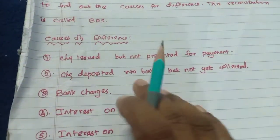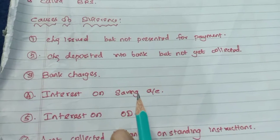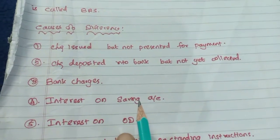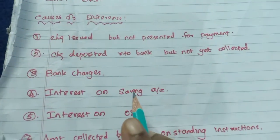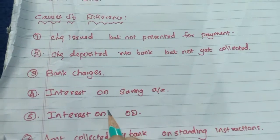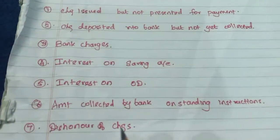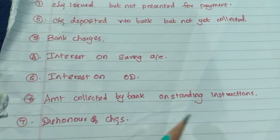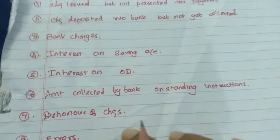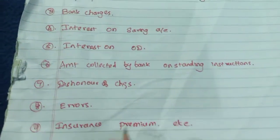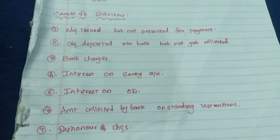The causes of difference between cashbook and passbook include: check issued but not presented for payment, check deposited into bank but not yet collected, bank charges, interest on savings account, interest on OD, amount collected by bank, outstanding instructions, dishonor of checks, errors, and insurance premium, among other cases.